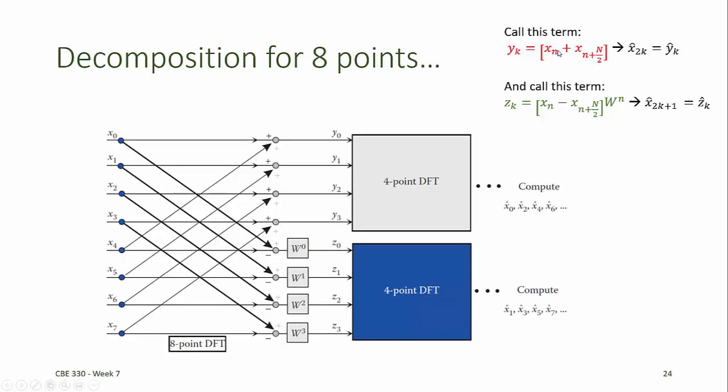If we do this decomposition for a system containing eight data points, x0 through x7, then the y hat k values come from the sum of x sub n and x sub n plus n by 2. So y0 comes from the sum of x0 and x4, y1 comes from the sum of x1 and x5, and y2 comes from the sum of x2 and x6.